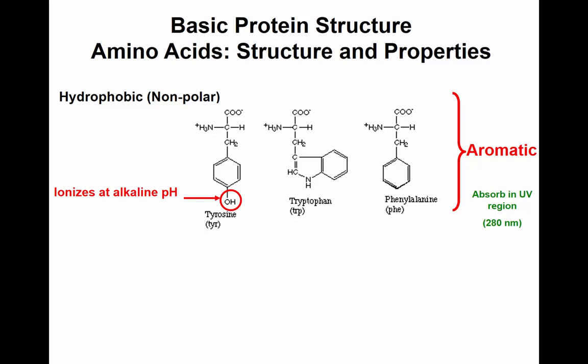Another characteristic specific to tyrosine: it has a phenol group — a benzene ring with an OH. This OH group is important because in alkaline pH, it ionizes, meaning it gives up its proton and becomes O-minus, becoming a charged amino acid. When you have a charged amino acid, it impacts solubility — it enhances the solubility of the protein by increasing interactions with water.